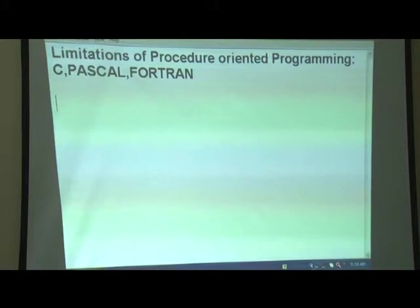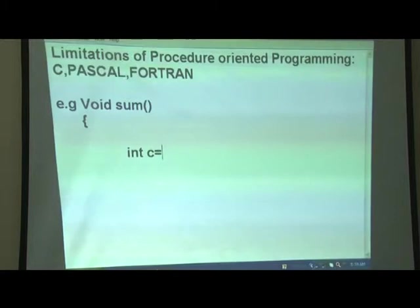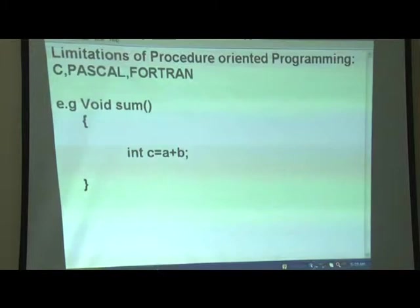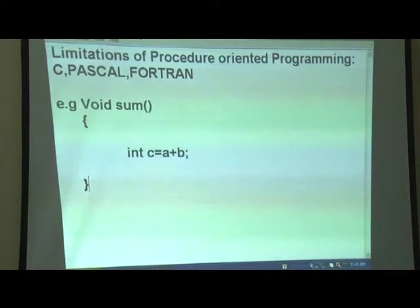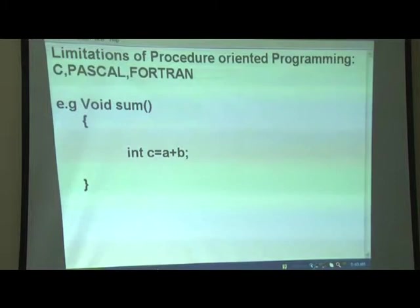For example: void sum, int c = a + b. This is the sum function — it calculates the sum of two integers and stores it in a third variable. Wherever we want to use sum, we just call the function at various places in the program. It does the arithmetic operation and stores the result in a third variable, saving execution time and speed.